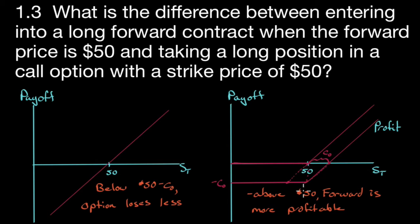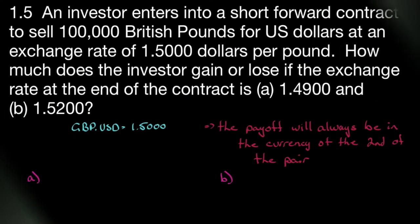So below 50 minus C0, we wish we were in the call option. Above $50, we wish we were in the forward contract. Question 1.5: